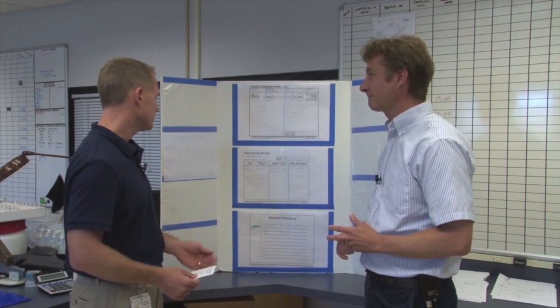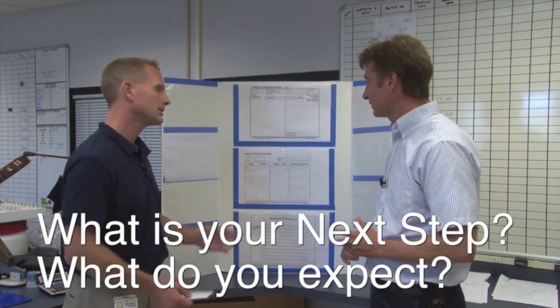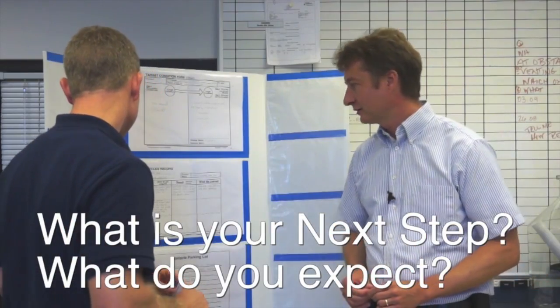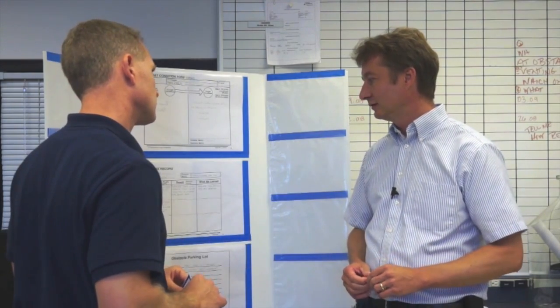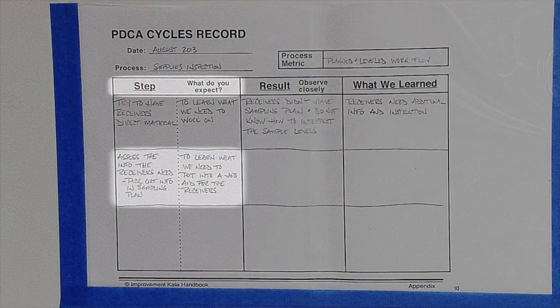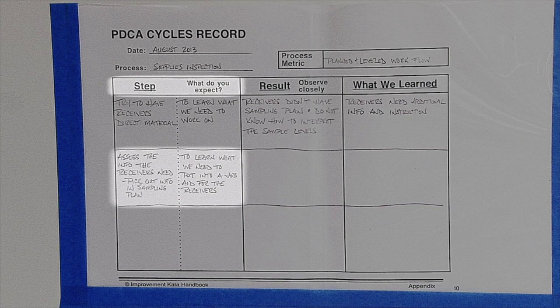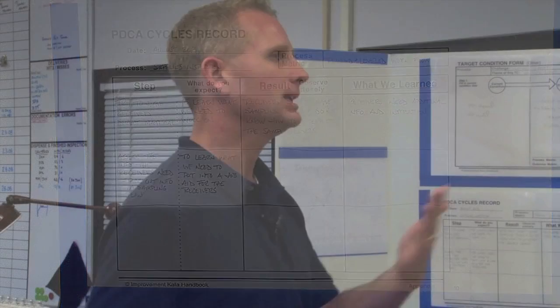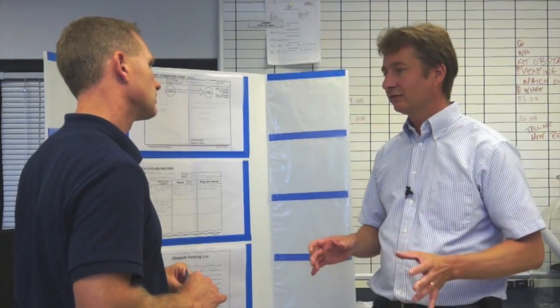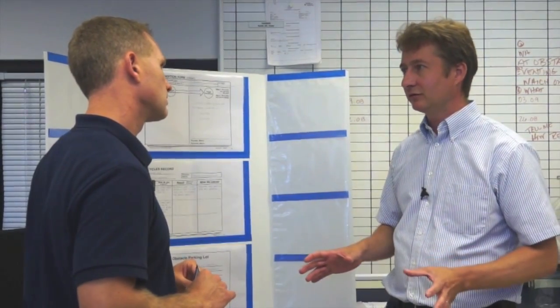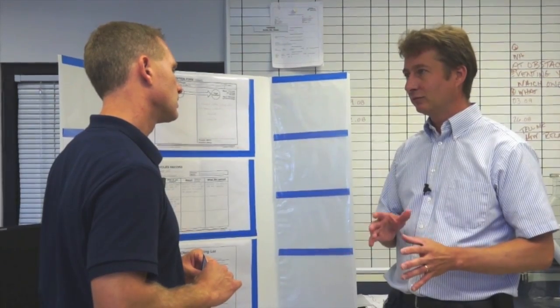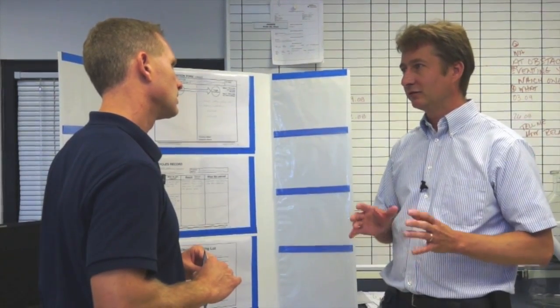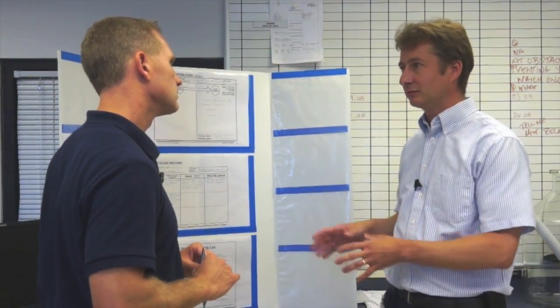So share with me now, if you will, the next step that you plan on taking, your next cycle. Our next step is to assess the information that the receivers will need to be able to direct material movement. Okay. So tell me a little bit more about how you plan on taking that step. Well, we currently have a sampling plan that has a lot of information in it, and so we want to go through that and identify which pieces the receivers need for directing material movement.